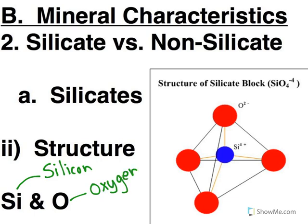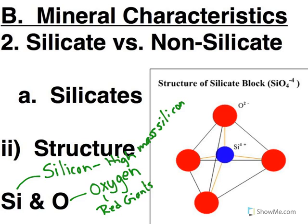Now recall, those are both elements that are produced when a high mass star goes through its final stages. All red giants create oxygen, and then the very high mass giants create silicon. This is the second to last element that they create, because then the silicon fusion produces iron. So it's no wonder that these are very abundant, because these are the primary elements created in the life cycle of a star.